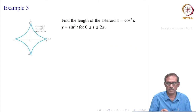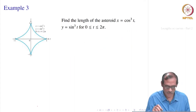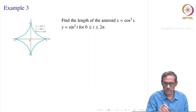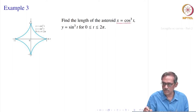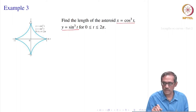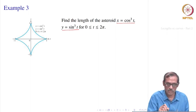Let us take one more example. Here, we want to find the length of the asteroid, which is given in parametric form: x equal to cosine cubed t, y equal to sine cubed t, where t varies from 0 to 2 pi. If you plot it, it looks something like this — it has four petals, one in each quadrant.